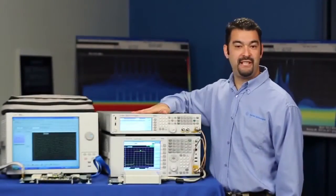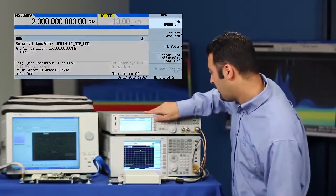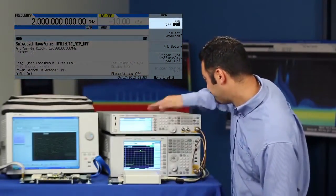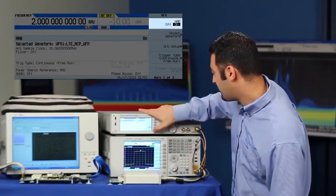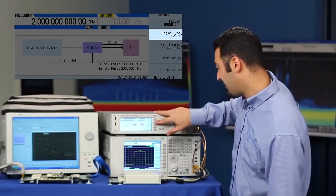The first thing we want to do is configure our arbitrary waveform generator to transmit an LTE signal. So we turn on the ARB. Next, we want to go to the AUX function and turn on the digital interface. Before we do that, we have to set up the logic type, LVDS.